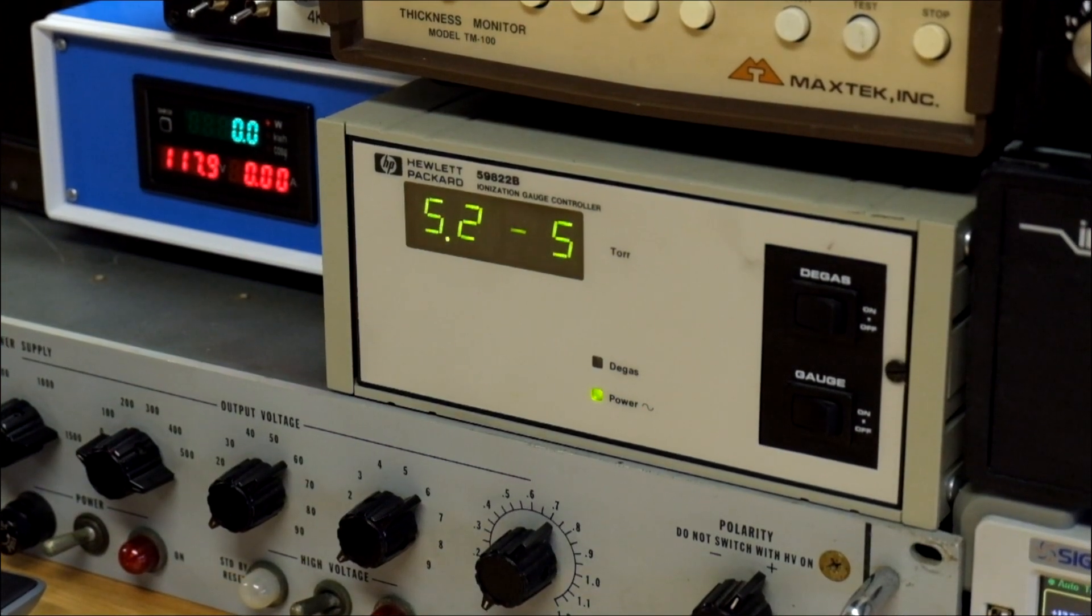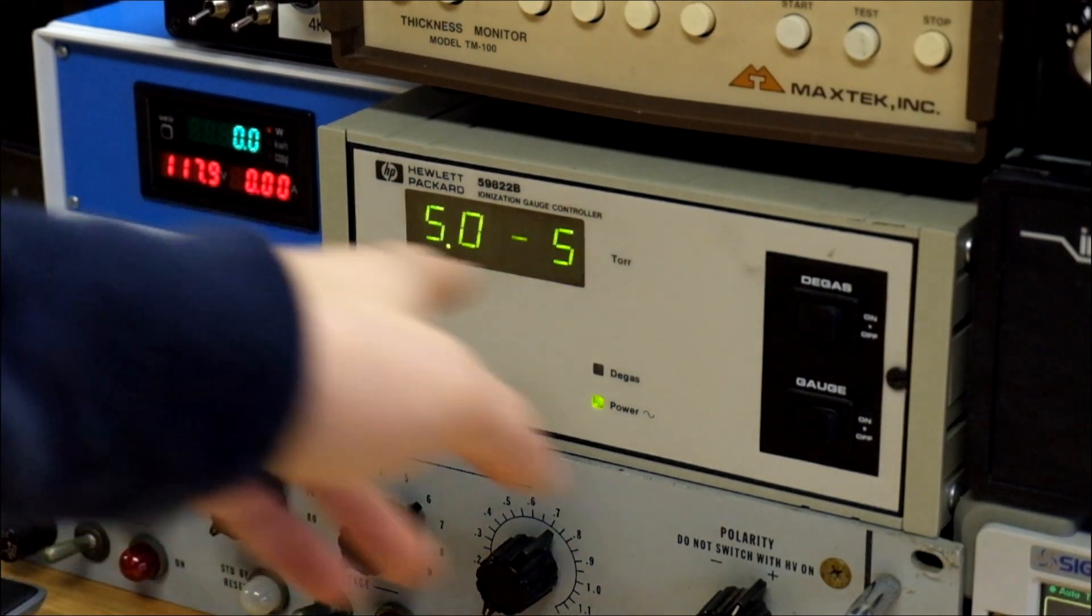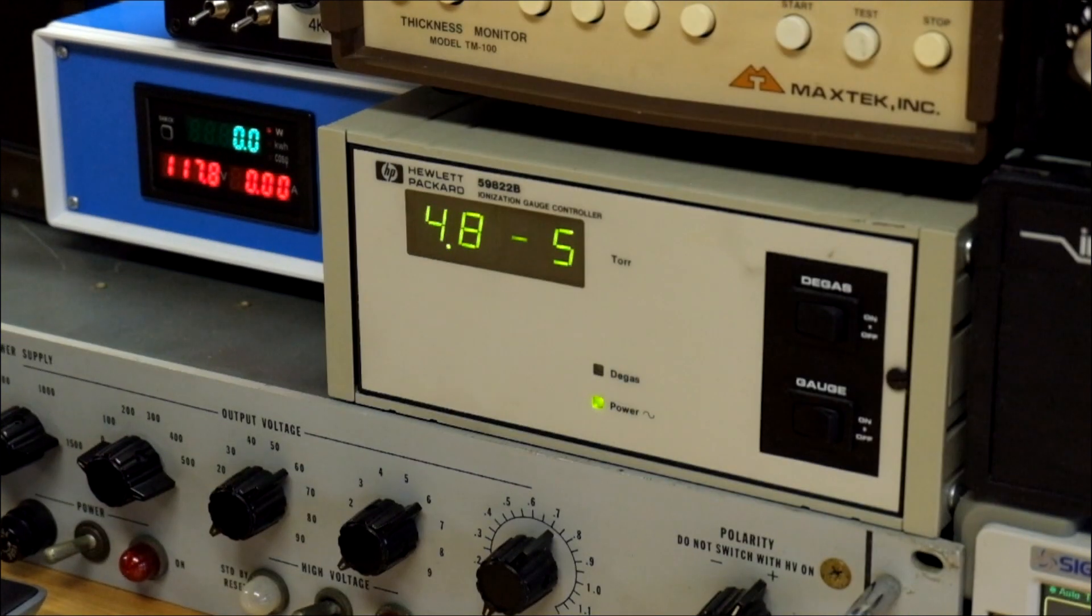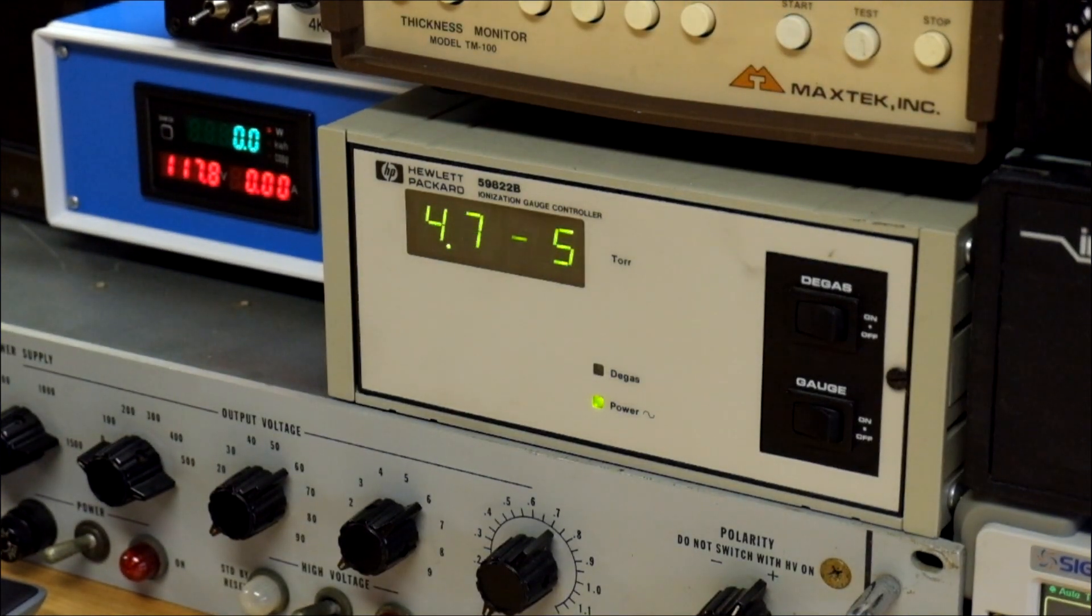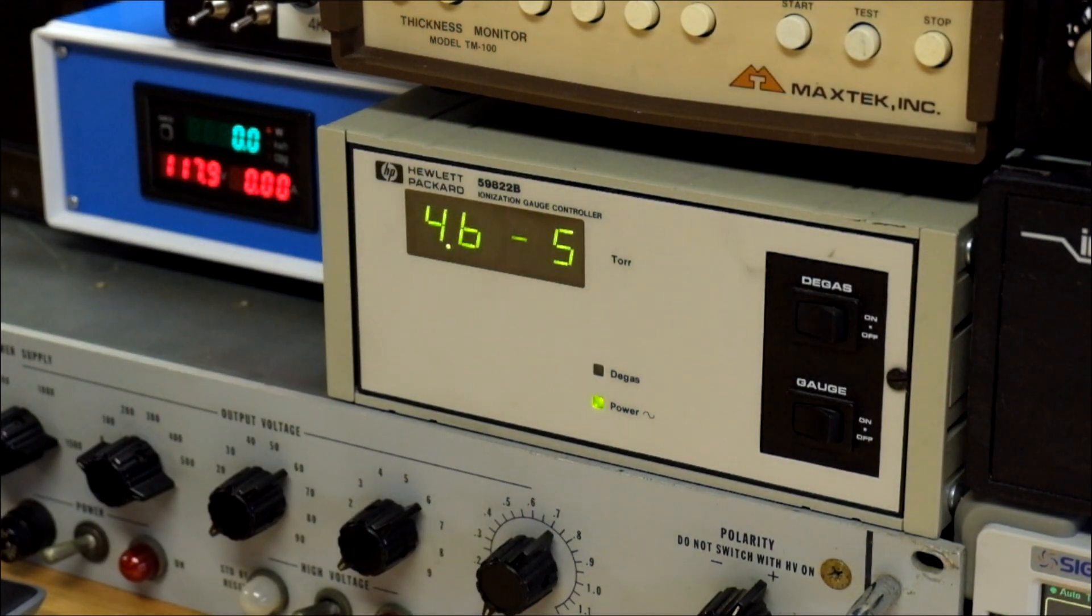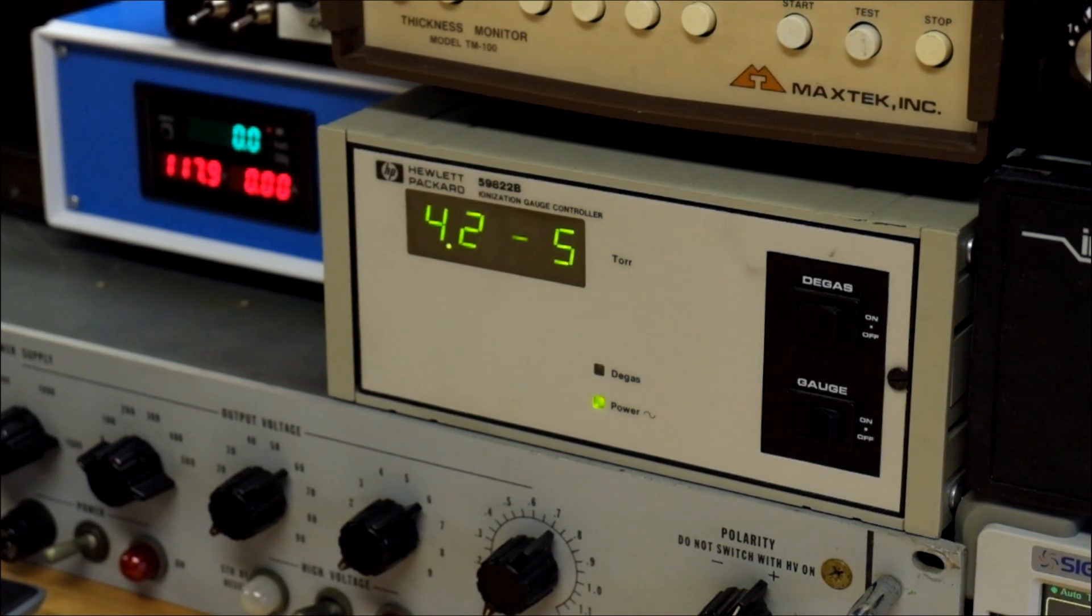So it's going to slowly pump down, and it's going to go to the minus 6 range and stay there for a little bit. Once it drops to 10 to the minus 6, I can do a degas on the gauge for about 10 or 15 minutes. Oftentimes, the pressure readings you get on these ion gauges will be a little bit higher than the actual readings, because there will be a pressure gradient that develops due to the outgassing of the filament and stuff inside of the ion gauge itself. So you can perform a degas to get the actual pressure.